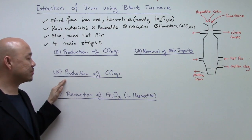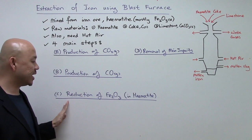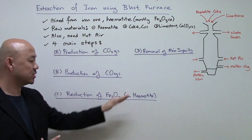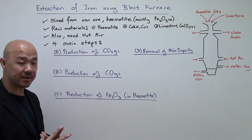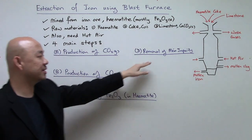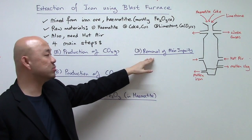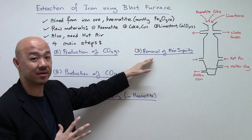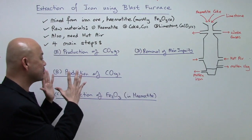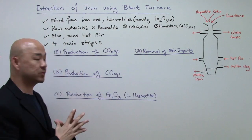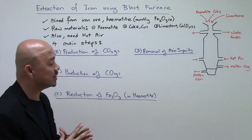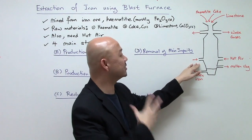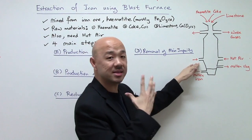The four main steps are: production of carbon dioxide, then production of carbon monoxide, then the reduction of iron(III) oxide in the hematite, and finally the removal of the main impurity in the hematite. Before going into the equations involved, let's take a look at a schematic diagram representing the blast furnace.